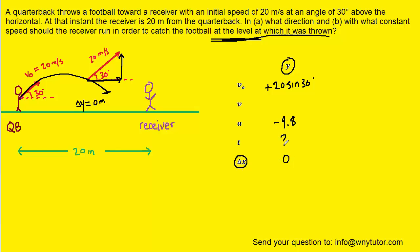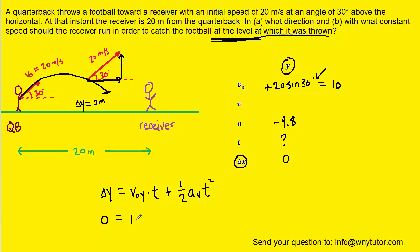Now that we have this information filled in, we can easily calculate the time of flight using the kinematic equation we have learned in this chapter. We fill in the known values: displacement equals 0, and the initial velocity is 20 times the sine of 30, which — making sure your calculator is in degree mode — equals 10 meters per second. We then have plus one half times the acceleration of negative 9.8 times time squared, and we can simplify one half times negative 9.8 to negative 4.9.